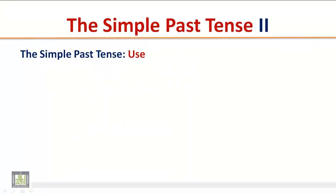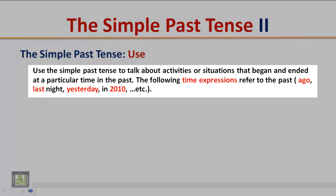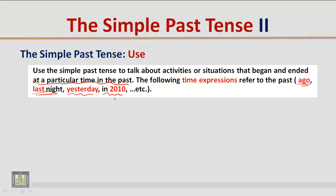Use the Simple Past Tense to talk about activities or situations that began and ended at a particular time in the past. The following time expressions refer to the past: ago, last — for example, last night, last Monday, last week, last year — yesterday, in 2010, in 2012, in 1431, etc.